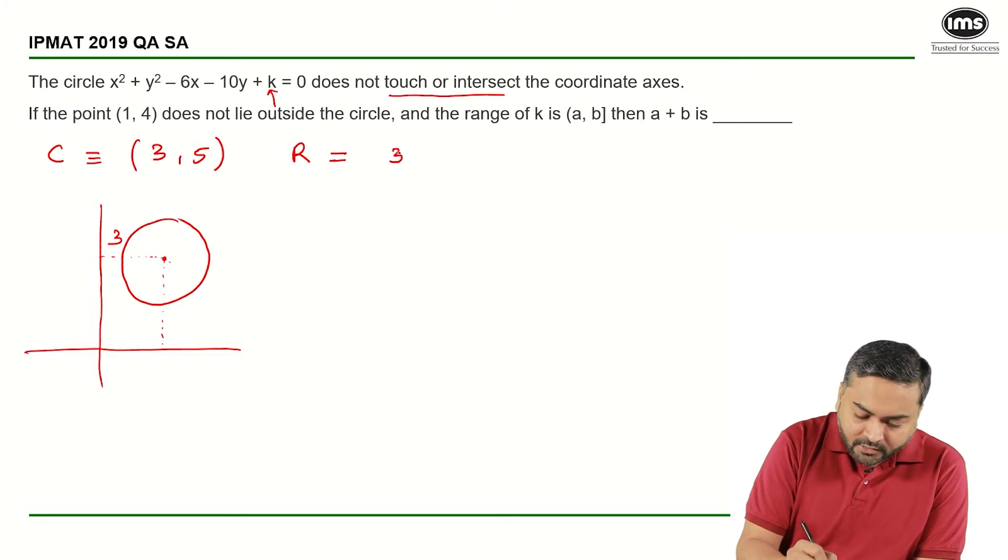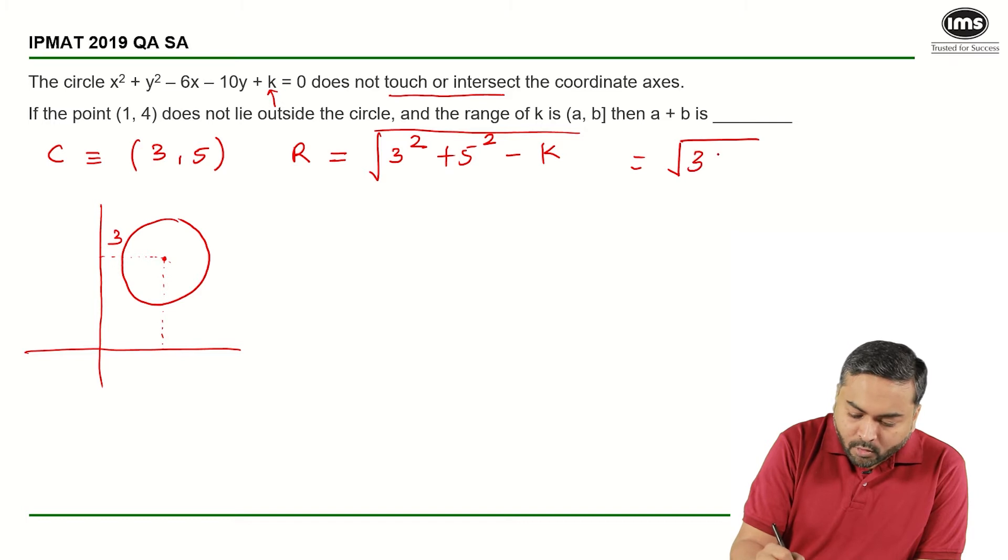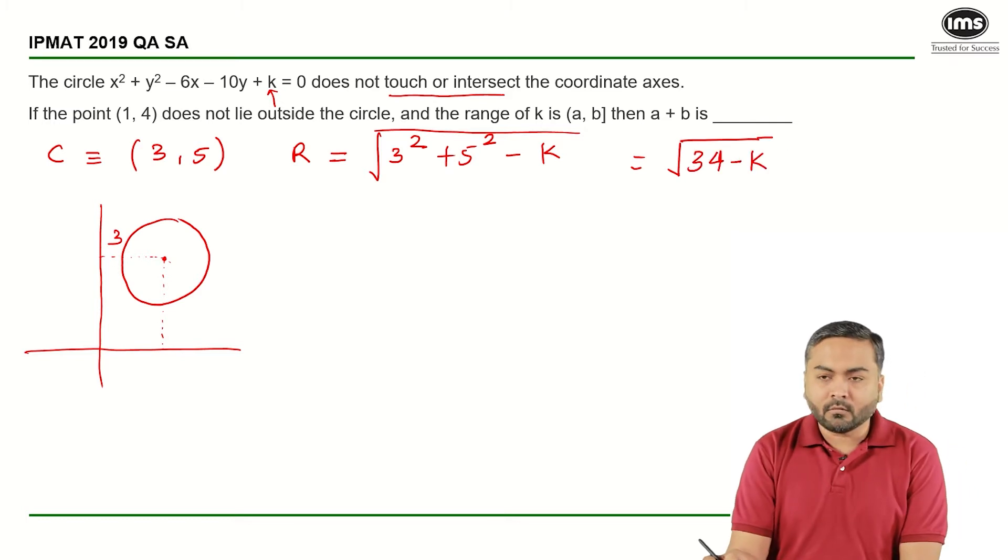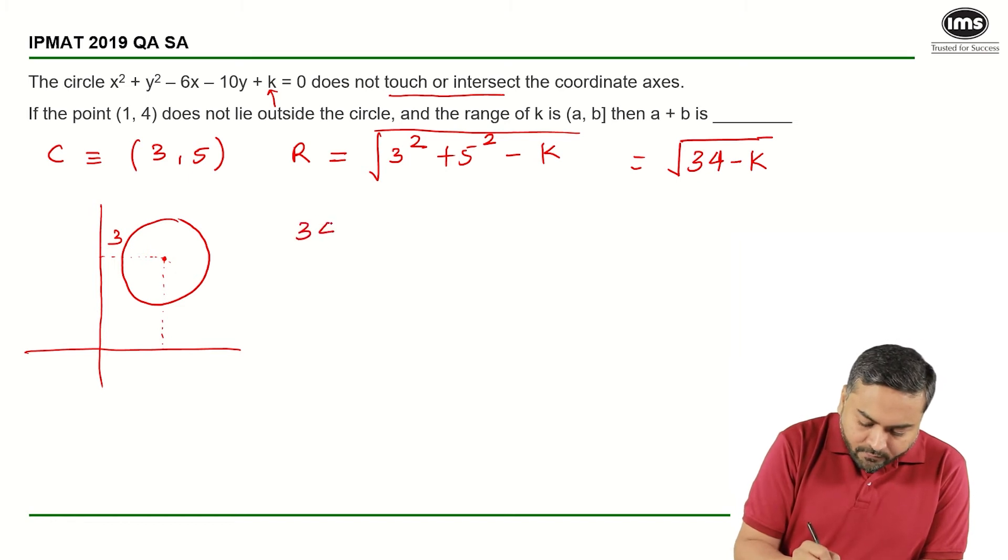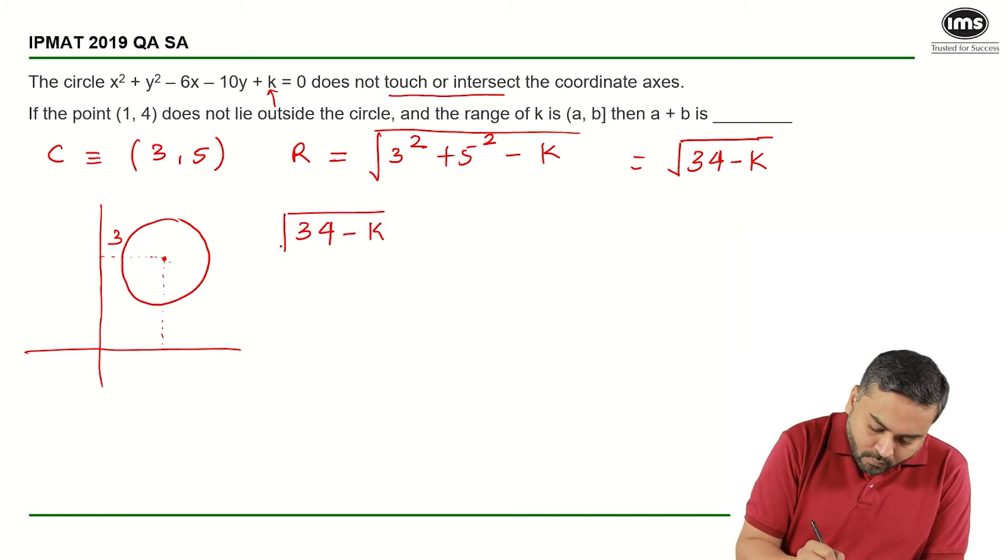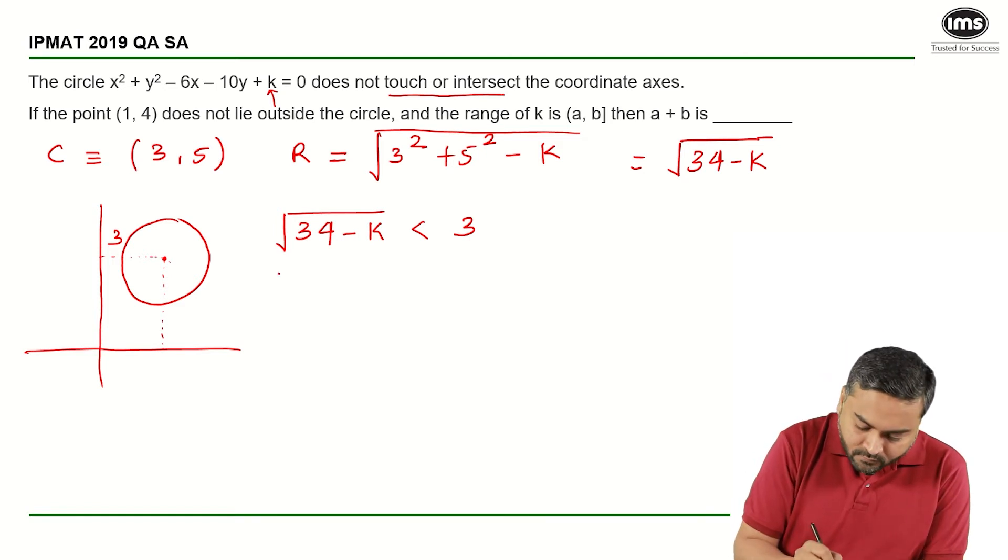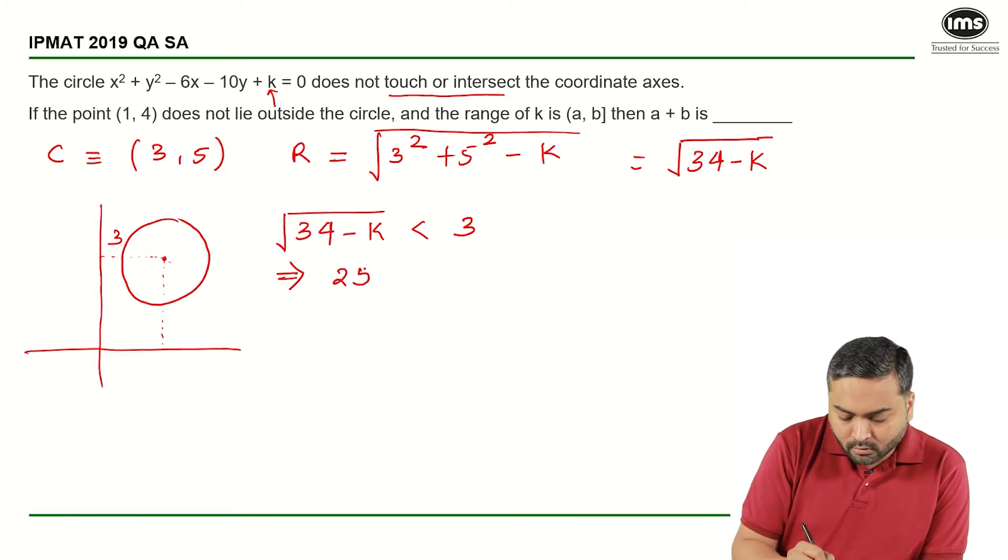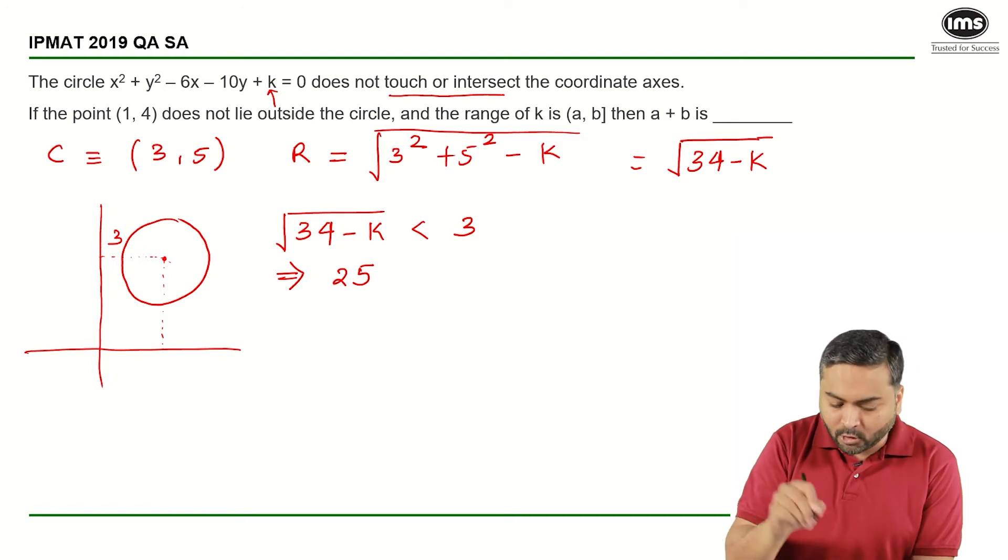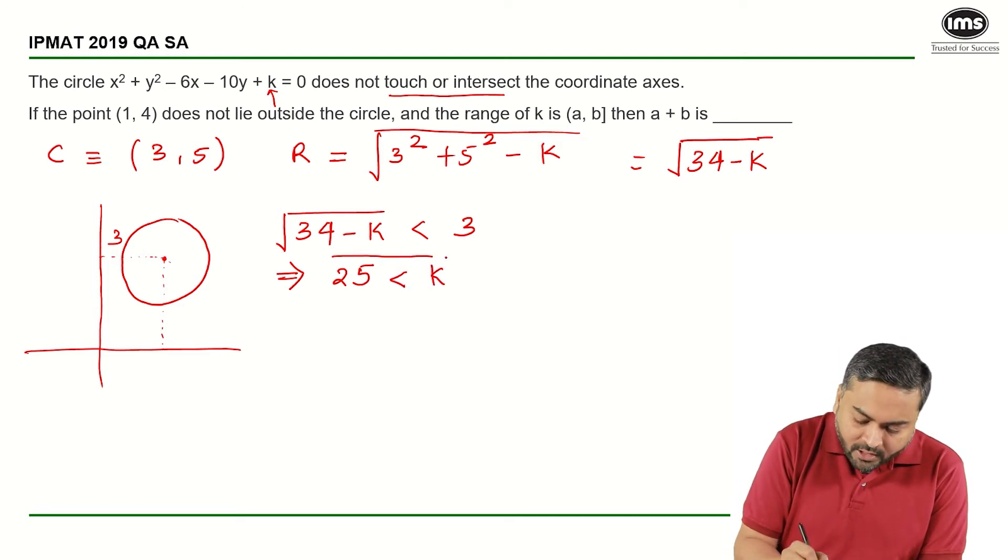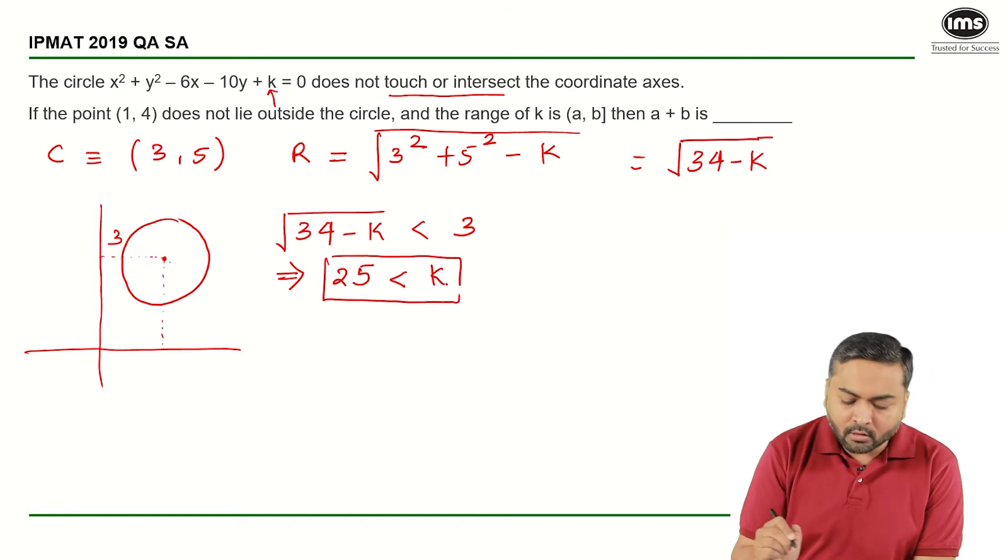So the radius is nothing but the square root of 3 squared plus 5 squared minus k, that is equal to root of 34 minus k. So the radius that we have, root of 34 minus k, should be less than 3. And if I square both sides, I will get 34 minus k is less than 9. So that gives me 34 minus 9 is 25, and moving minus k to that side, that gives me 25 is less than k, or in other words, k is greater than 25.